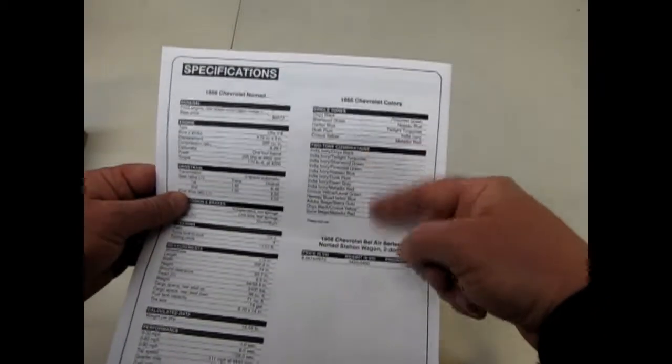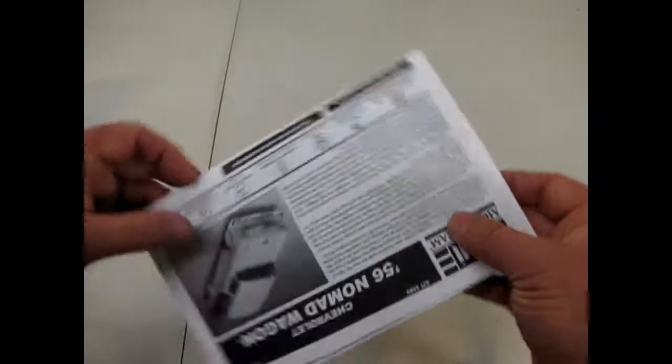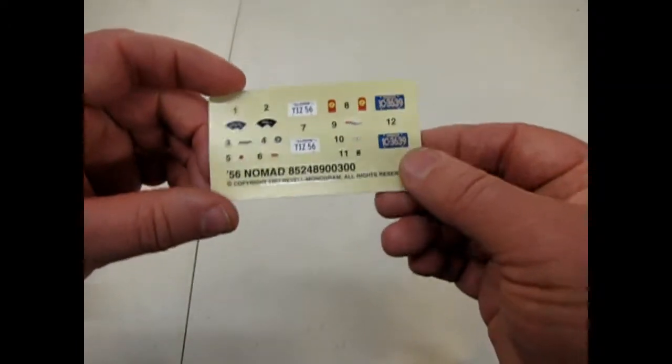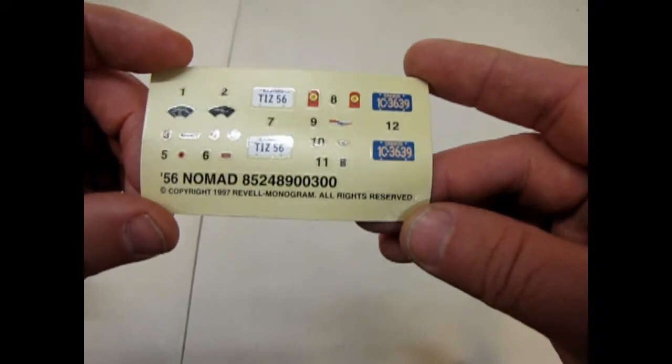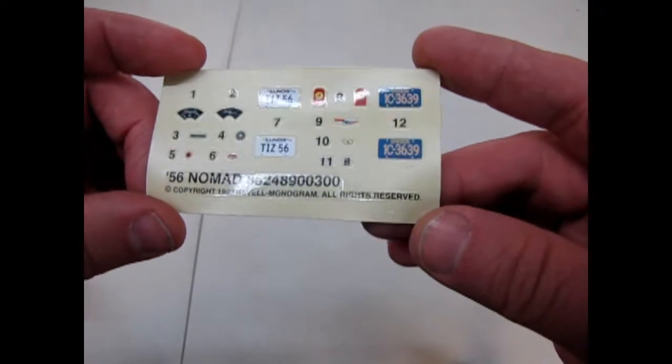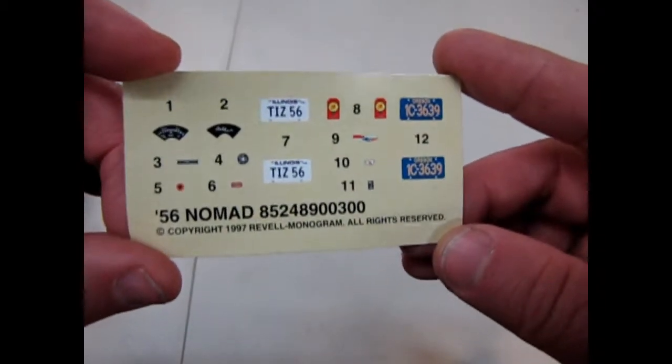And then they give you all these specifications on the cars. And then the colors over here as well. So, very informative instruction sheet. Or formative. Very formative instruction sheet if you're scared of doing a lot of parts. Here's our decal sheets with Illinois and Oregon license plates. As well as a bunch of other instrument panels.